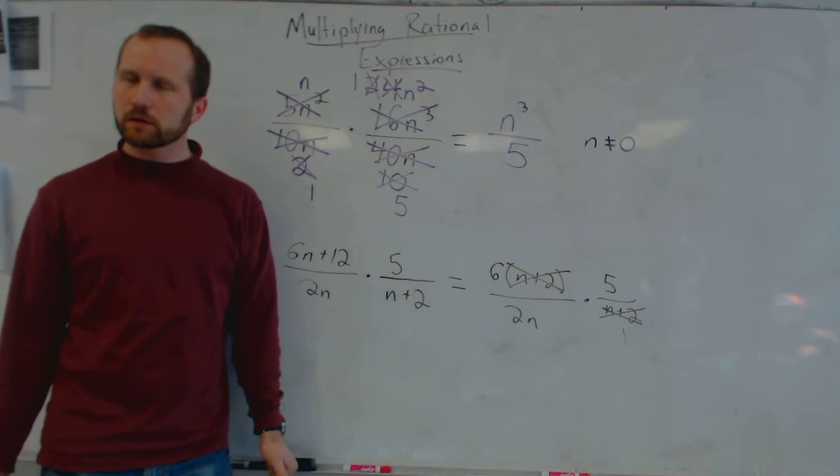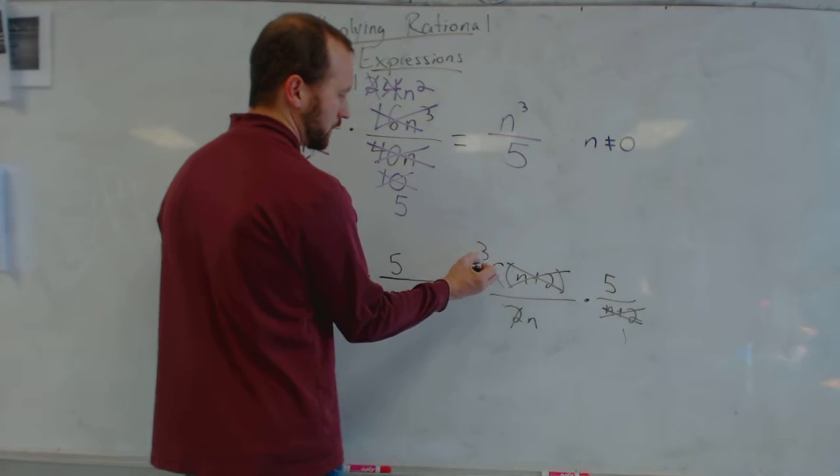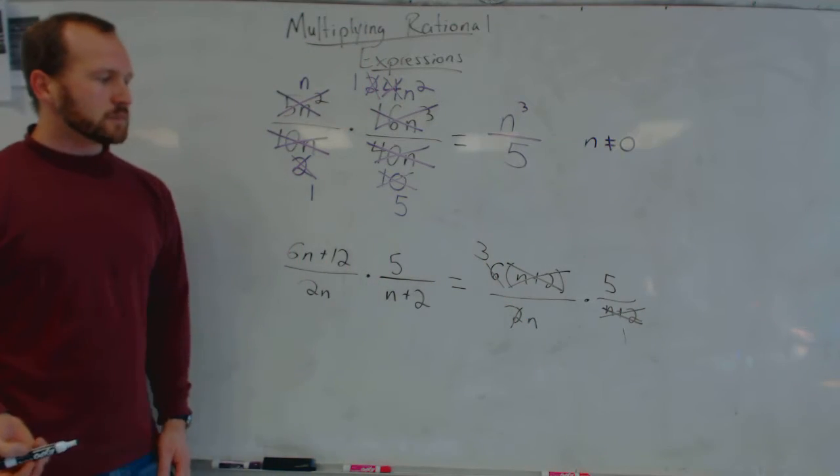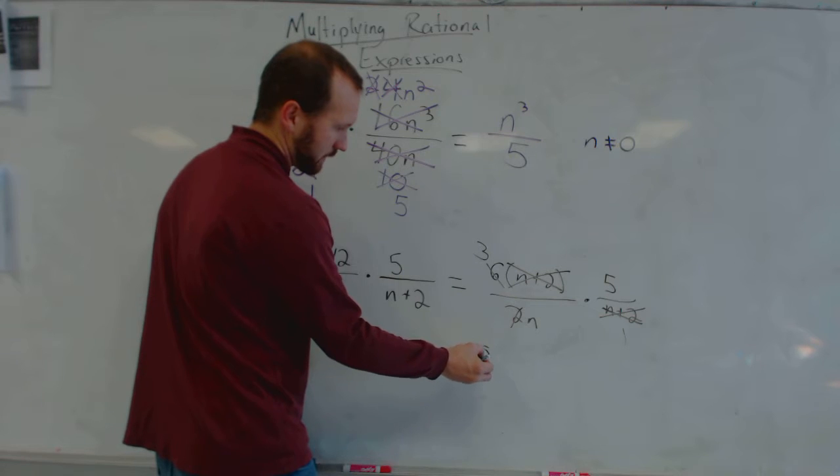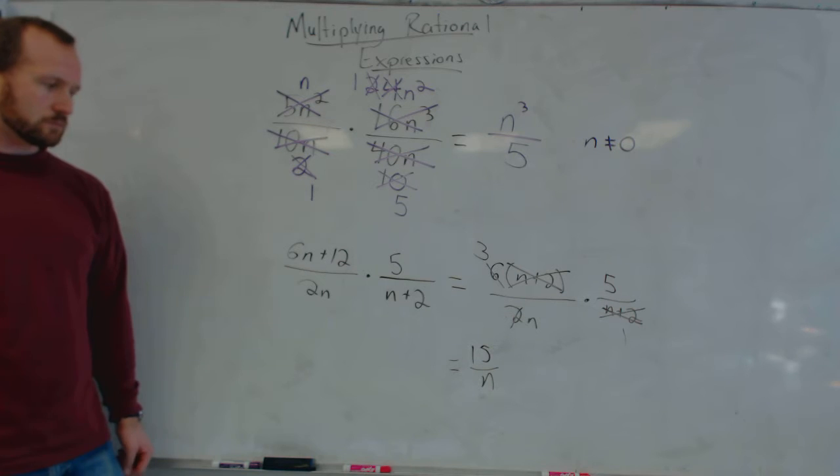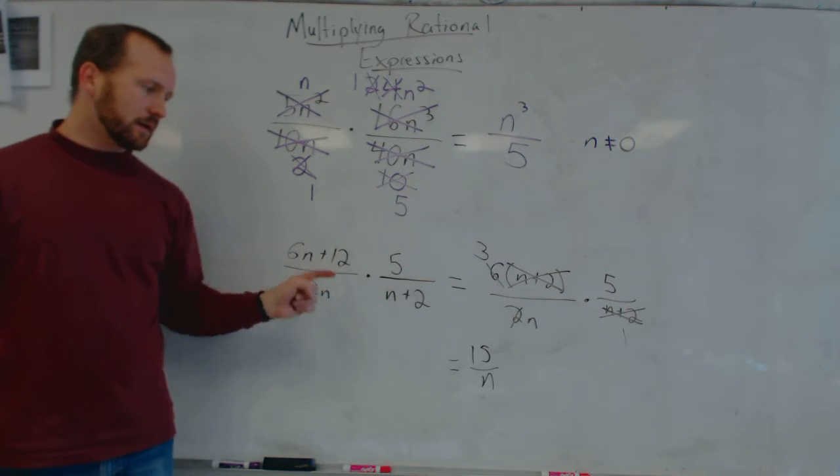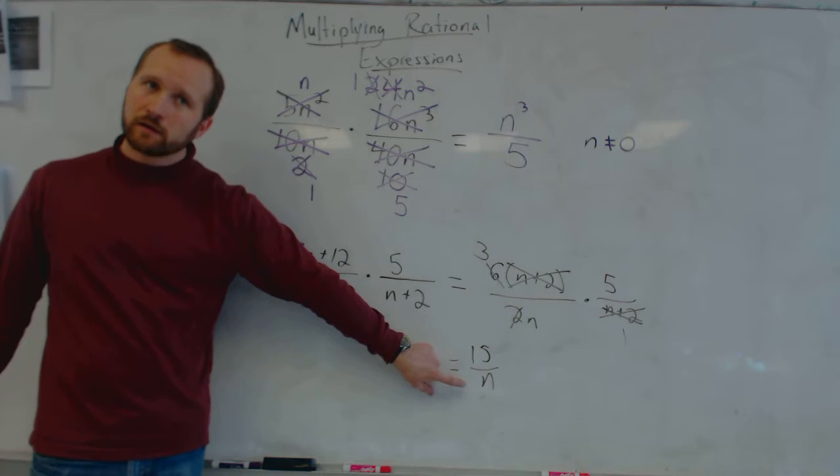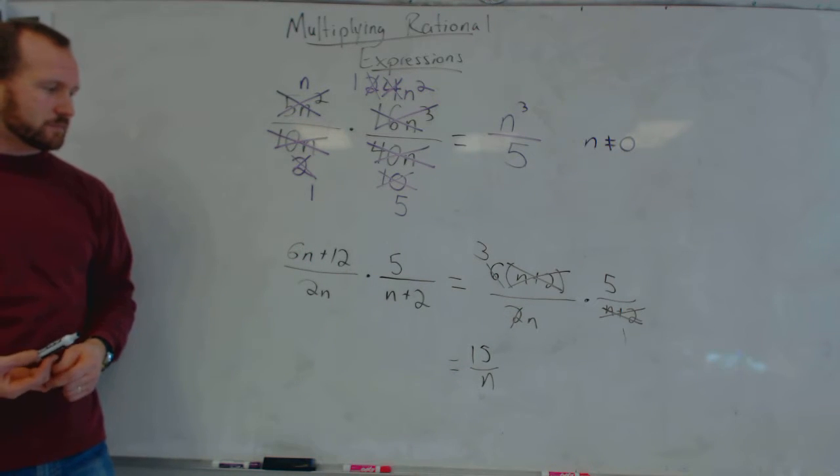Is there anything else I can cancel? I can cancel the 2. So 6 over 2 becomes a 3. Now I have 3, 5, and n. I don't see anything else to cancel, so I would just write it out as 15 over n. Which is kind of crazy. I mean, it's kind of crazy that this equals this. Right? But it does.